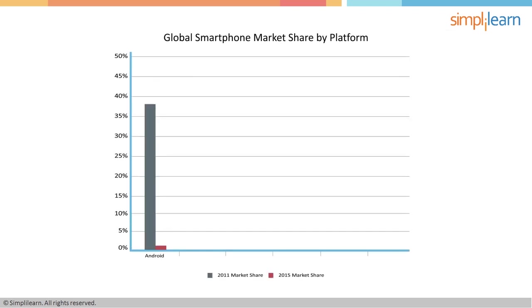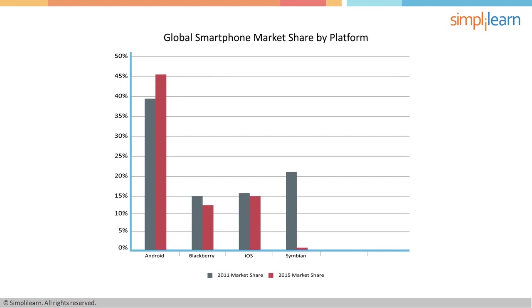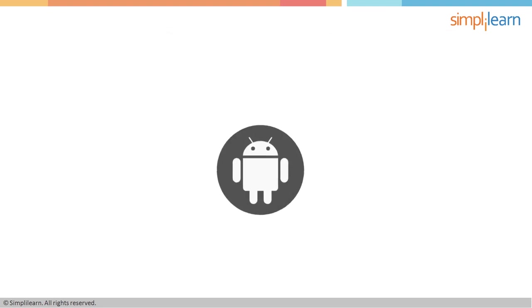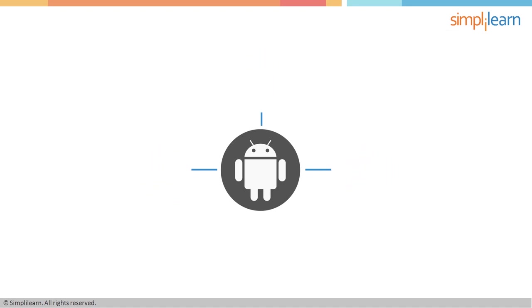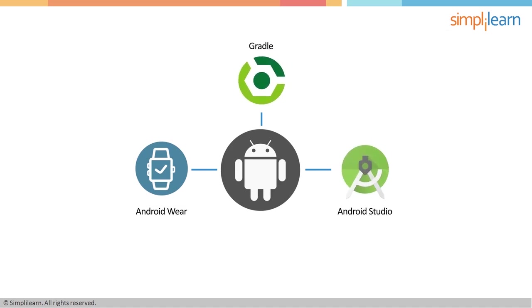Why Android? With the highest market share, Android is the dominant mobile operating system today, running on countless models of smartphones, tablets, and other devices. The whole Android ecosystem has undergone many improvements. We got new gadgets like smartwatches, new software like Gradle and Android Studio, and Android's new OS, which is the 6.0 Marshmallow.